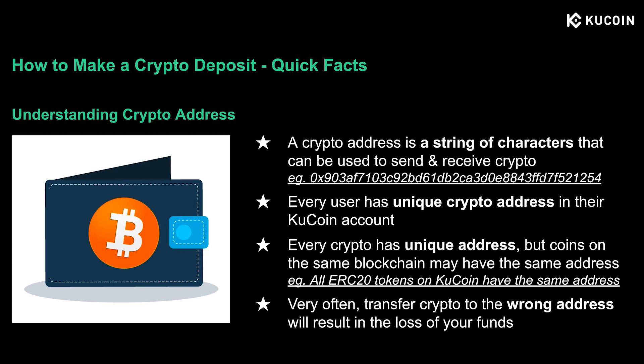Before we start, let's first look at what are the features of a crypto address and why it is extremely important to use the correct address. A crypto address is a string of characters that can be used to send and receive cryptocurrency. You can see an example of an Ethereum crypto address that starts with 0x. Every user has a unique crypto address in their KuCoin account, just like a bank account number. And every crypto has a unique address, but coins on the same blockchain may share the same address.